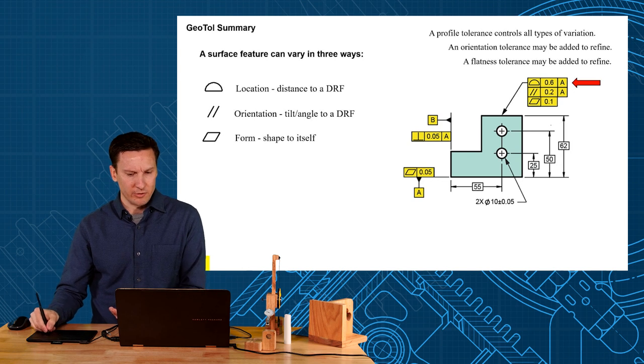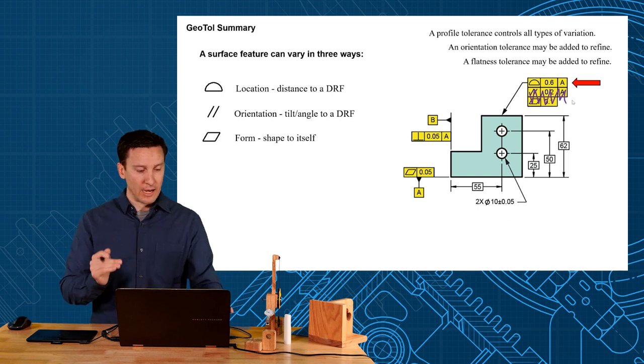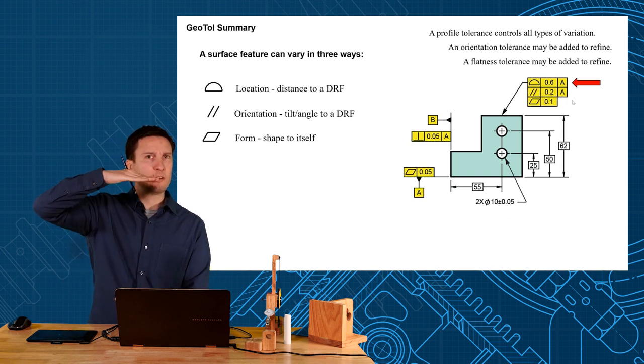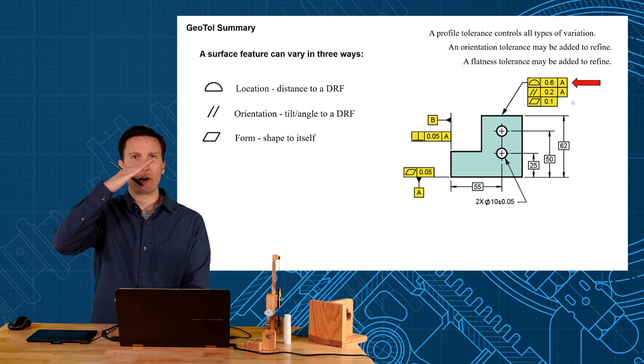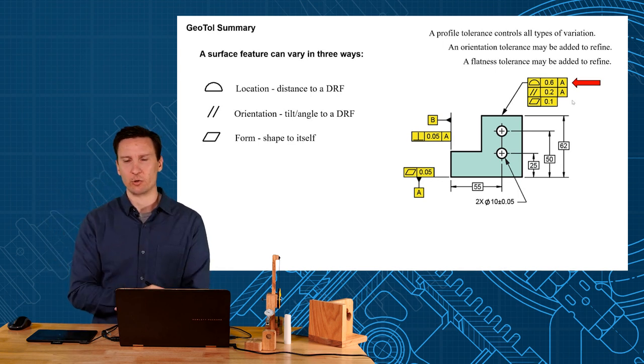Now you don't really need these other two right? I mean parallelism and flatness are being controlled by profile. So if you want to add one they're used to refine like I don't care where it is but it needs to be more parallel. I don't care how it's tilted but it needs to be flat. So you refine with these other controls.